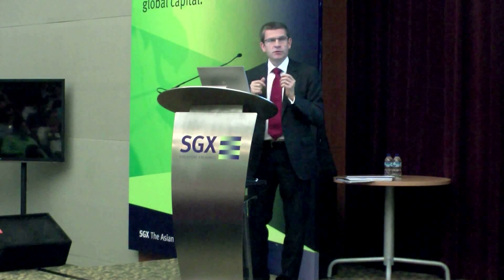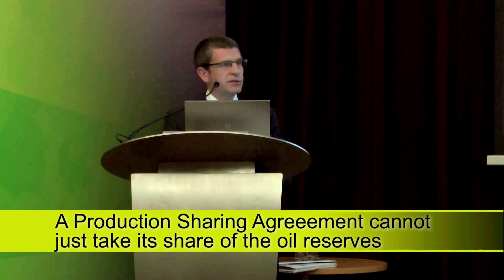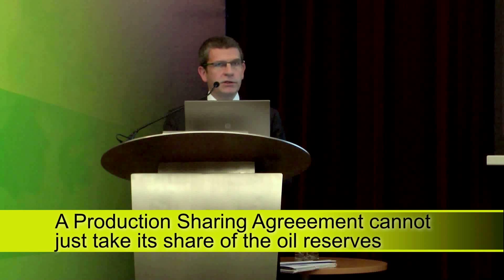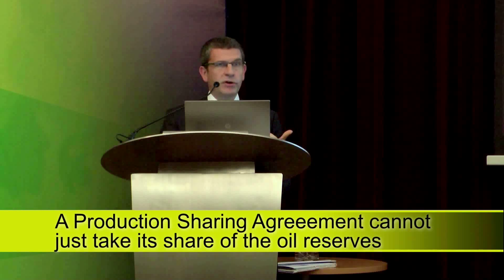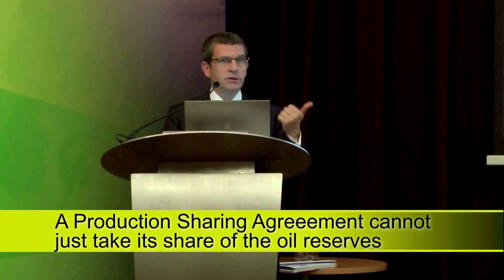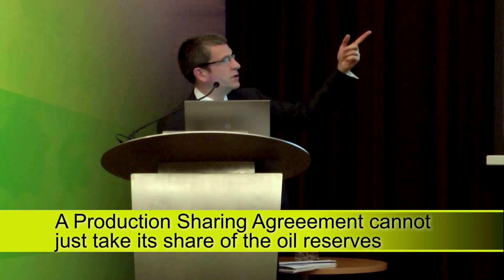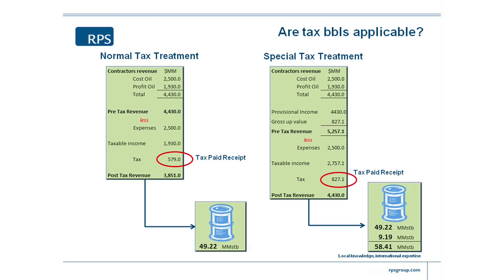So if I were to book those barrels, the key to booking barrels is not the direct share of the starting number. In a PSC, you can't just take 150 and multiply by some percentage like a working interest and get to the answer. You have to go through the calculations of cost oil and profit oil to calculate the contractor's pre-tax revenue. The pre-tax revenue to the contractor is his share of the cost oil and his share of the profit oil. You take that $4,430, which is the pre-tax revenue, and back out how many barrels that equals. With my assumption of $90 oil, that equals 49.22 million barrels. That becomes the entitlement volume that I can book — it's not half of 150 or any arbitrary number. It's calculated through the financial calculation.